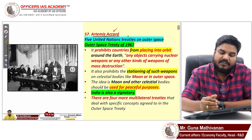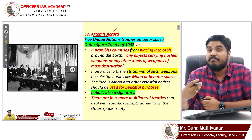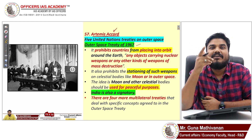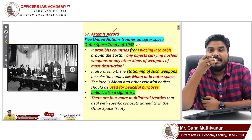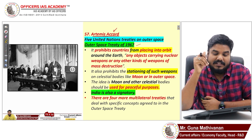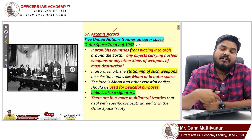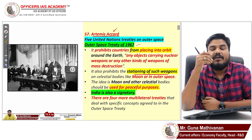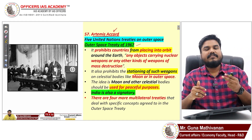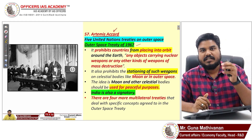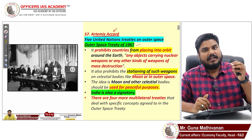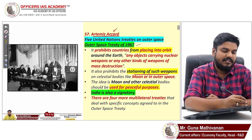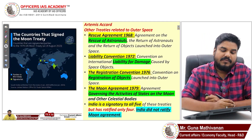The first treaty is the Outer Space Treaty. This treaty prohibits countries from placing weapons of mass destruction in orbits — like how we place satellites — and also prohibits stationing such weapons of mass destruction on celestial bodies like the Moon or any other celestial body.